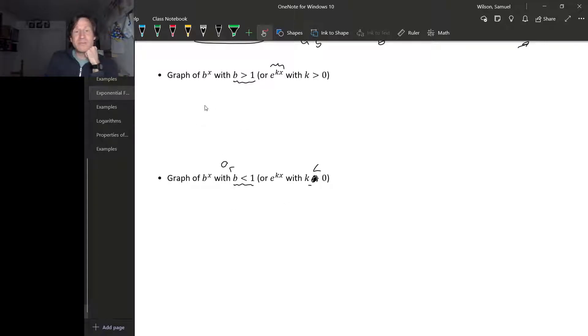If b is bigger than 1, that common ratio is bigger than 1. So wherever you start out, to get the corresponding point one unit further to the right, you multiply by b. But b is bigger than 1, so that's going to make it bigger. Then you multiply by b again and b again, so it's increasing. If you go backwards,